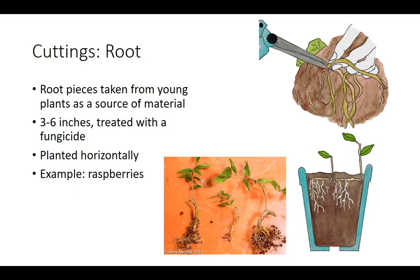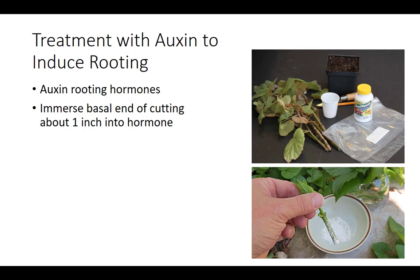To ensure optimal rooting of cuttings, start with a high-quality parent plant. Treatment of cuttings with the plant hormone auxin is used to initiate rooting. Rooting hormone can come as a solution or powder. The most common method immerses the basal end of the cutting approximately 1 inch into the hormone, then plants it. Although auxins are not effective in all plant species, there are several benefits: a higher percentage of cuttings produce roots, root initiation is quicker, the number and quality of roots per cutting is increased, and uniformity of rooting along the length of the cutting is increased.